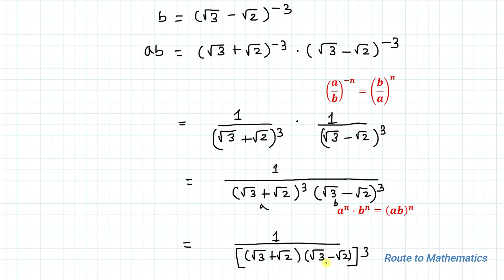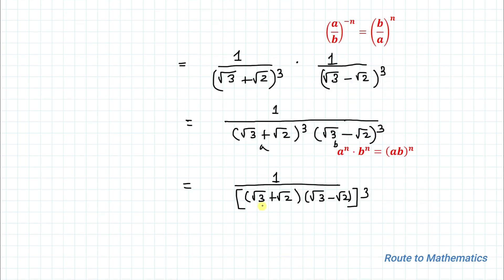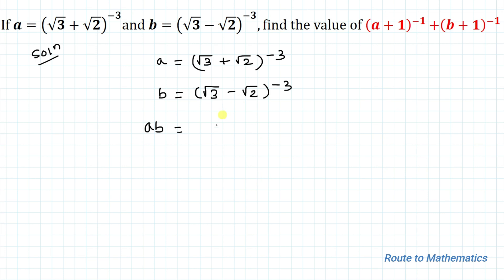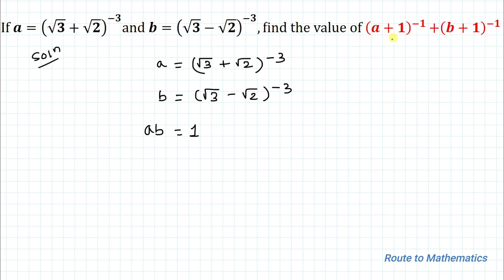Now applying the algebraic identity (a + b)(a − b) = a² − b²: we get (√3)² − (√2)² = 3 − 2 = 1. So the expression becomes 1/(1)³ = 1/1 = 1. Therefore, a×b = 1.